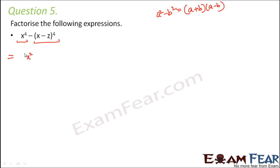So x to the power 4 can be written as x square to the power 2. Similarly, x minus z to the power 4 can be written as x minus z whole square to the power 2. So this is basically in the form a square minus b square where x square behaves like a and x minus z whole square behaves like b.